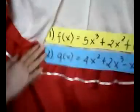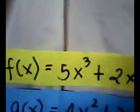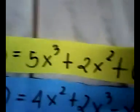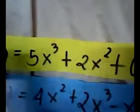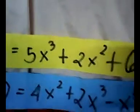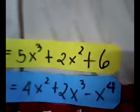Let's solve this problem. Number one is f of x is equal to 5x cubed plus 2x squared plus 6. This example has 3 terms. The highest degree term is 3. Therefore, the degree of the polynomial function is 3.